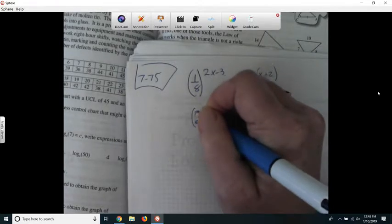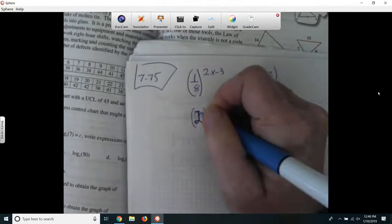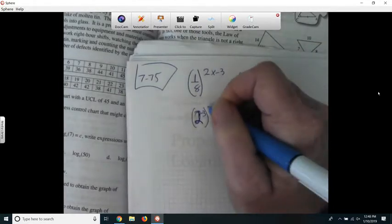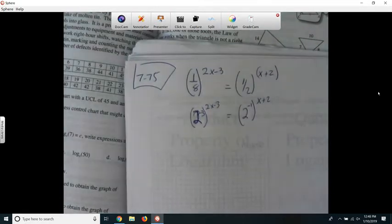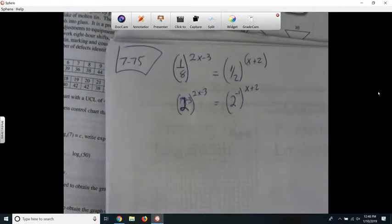Come on, write 2. So 2 to the negative 3, raised to the 2x minus 3.